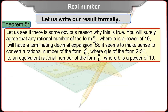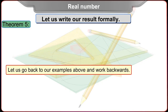Let us see if there is some obvious reason why this is true. You will surely agree that any rational number of the form A upon B, where B is a power of 10, will have a terminating decimal expansion. So it seems to make sense to convert a rational number of the form P upon Q, where Q is of the form 2 raised to n into 5 raised to m, to an equivalent rational number of the form A upon B, where B is a power of 10. Let us go back to our examples above and work backwards.